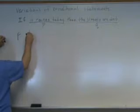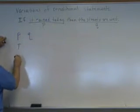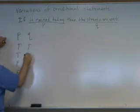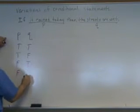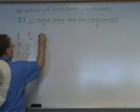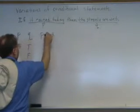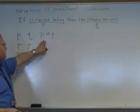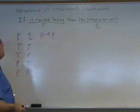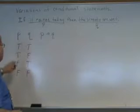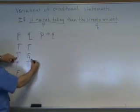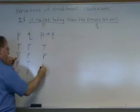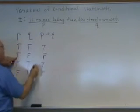Here's P and here's Q. True, true, false, false, true, false, true, false. We learned earlier that the only way a conditional statement can be false is if the condition is met and the promise is not kept. So this part is false and all the rest of these parts are true.